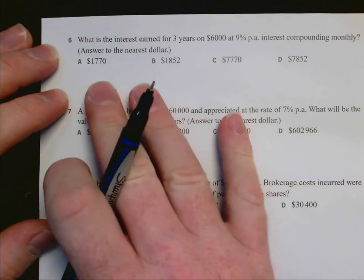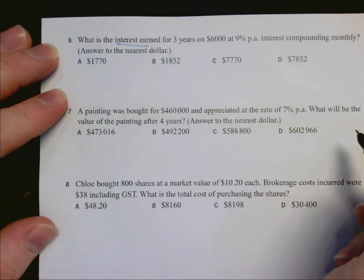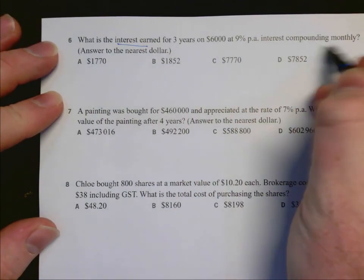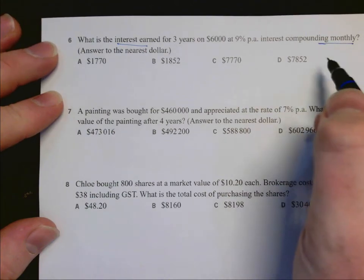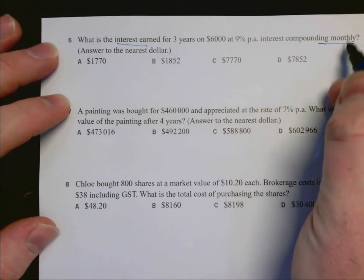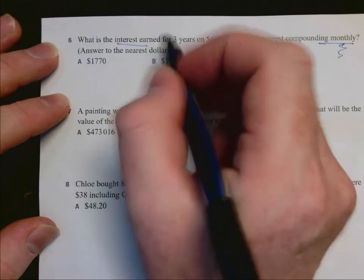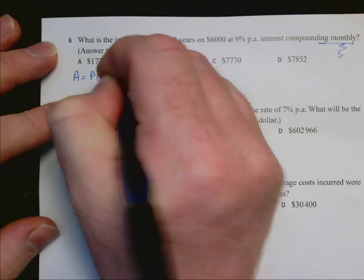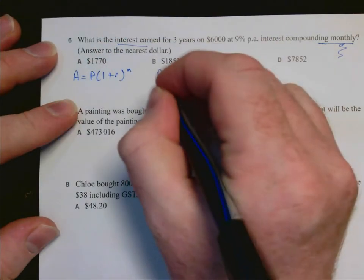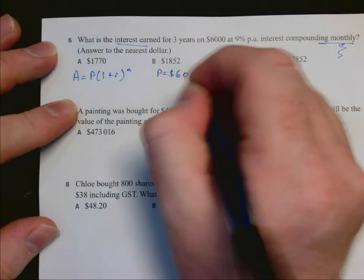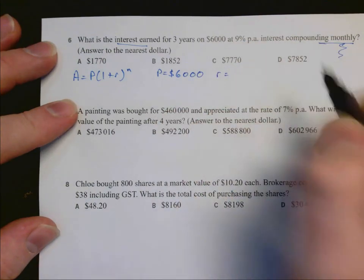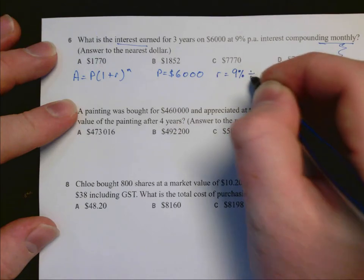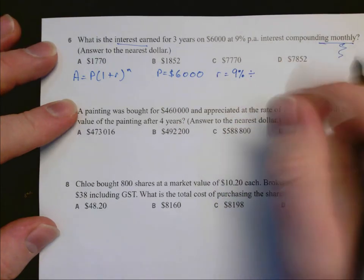Question 6, we need to work out the interest earned for three years, $6,000, 9% compounding monthly. That means we need to convert several things to be monthly. Let's write our formula down. The principal is fine, we don't need to change that. The rate is currently 9%, so we need to divide that by 12 to make it per month.